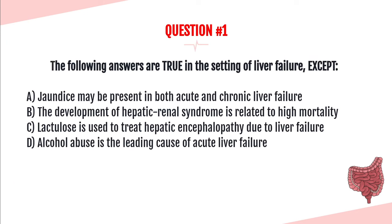Question number one. The following answers are true in the setting of liver failure, except: A. Jaundice may be present in both acute and chronic liver failure. B. The development of hepatic renal syndrome is related to high mortality. C. Lactulose is used to treat hepatic encephalopathy due to liver failure. Or D. Alcohol abuse is the leading cause of acute liver failure.